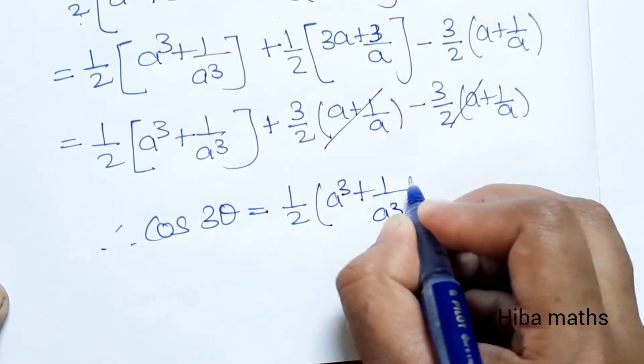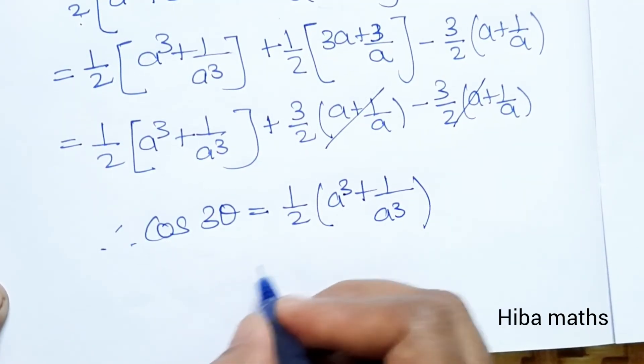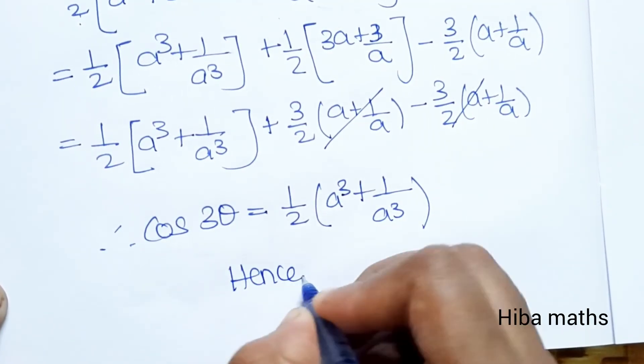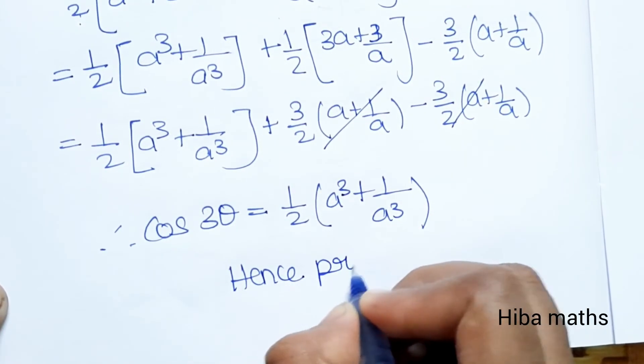Hence, cos 3 theta equals 1/2 (A cube plus 1/A cube). Hence proved.